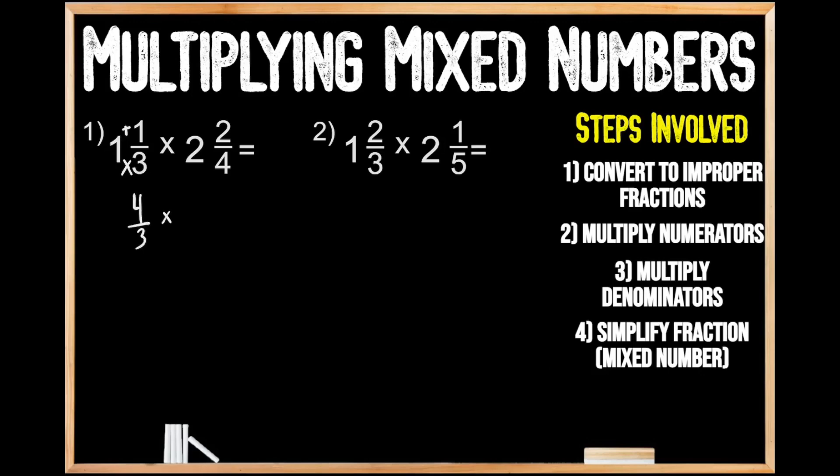Now we're going to convert our second mixed number, beginning by multiplying the value of our denominator by the value of our whole number. When we multiply 4 times 2, we get 8, plus the remaining 2 numerator gives us 10, for 10 fourths.